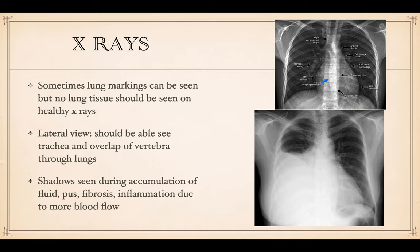X-rays: sometimes lung markings can be seen — those are just the major vessels — but that's not a bad thing, it just means your X-ray machine is pretty sensitive. No actual lung tissue should be visible; it should be clear. The lateral view — you should see some of the trachea and the overlap of the vertebrae through the lungs, but the lungs should still be transparent. You only see shadows during accumulation of fluid, pus, fibrosis, or inflammation.